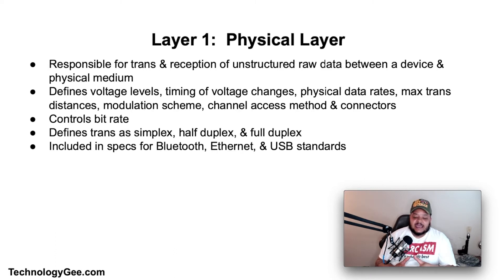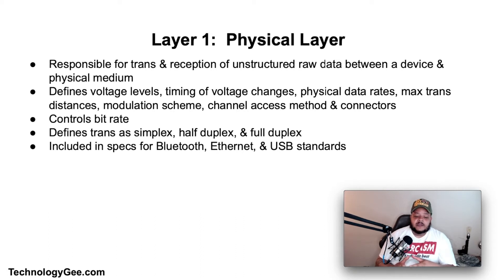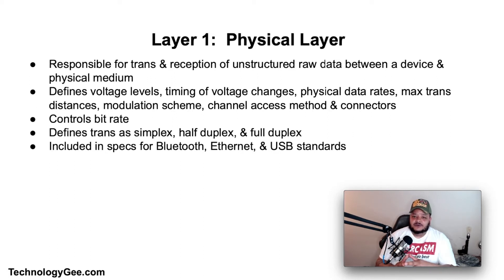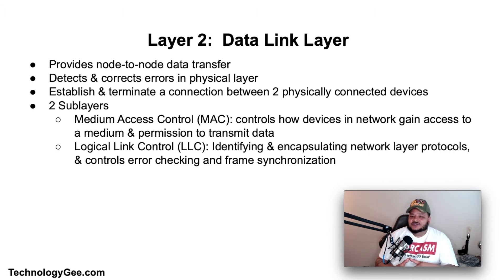The physical layer includes the layout of pins, voltage, line impedance, cable specification, signal timing and frequency for wireless devices. Bit rate control is done at the physical layer, and it may define the transmission mode as simplex, half duplex, and full duplex. Physical layer specifications are included in the specifications for the ubiquitous Bluetooth, Ethernet, and USB standards.